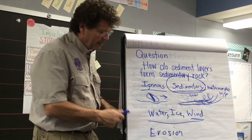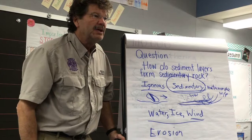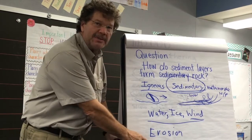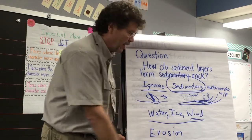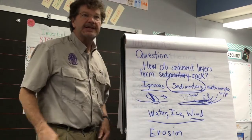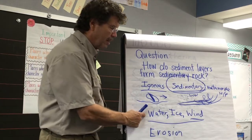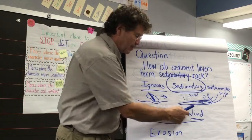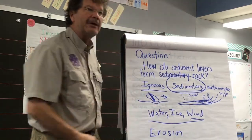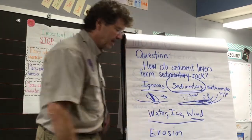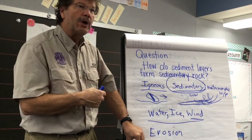Before we do that, we have to talk about erosion. Have you guys heard the word erosion before? Erosion is when you take away material or when you deposit it somewhere else. What are the three things that cause erosion? Water, ice, and wind — water like in floods or rivers, ice like in mountains and glaciers, and wind. All three of these make up erosion.